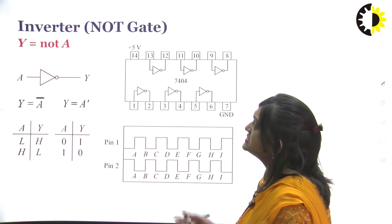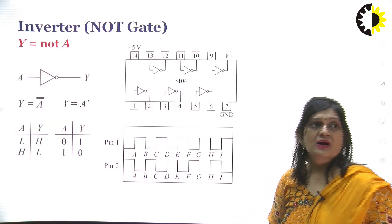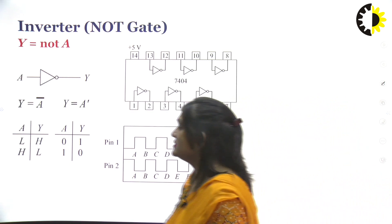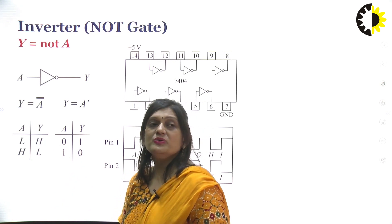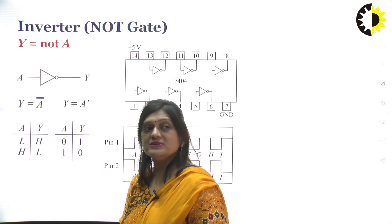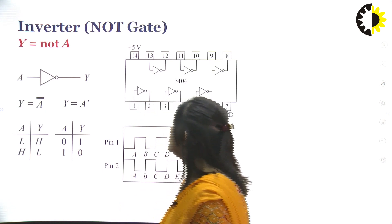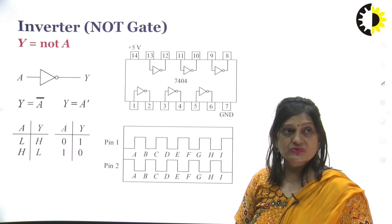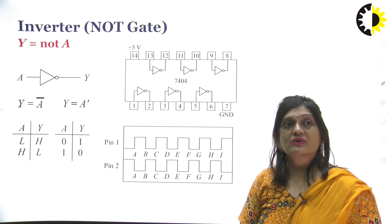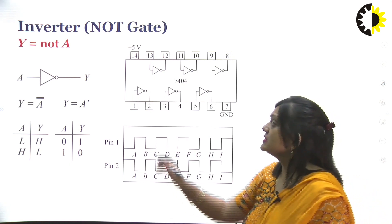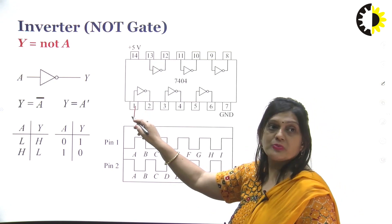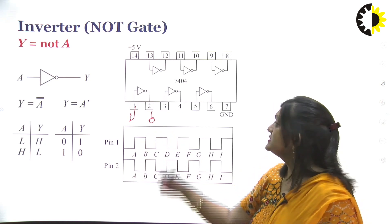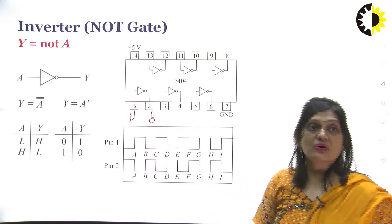For the NOR gate, if we give input A = 0 the output will be high, and if the output is high the input will be low. The IC used in labs for the NOT gate is the 7404. If the input is high, the output will be 0. In this IC there are a total of 6 NOT gates.